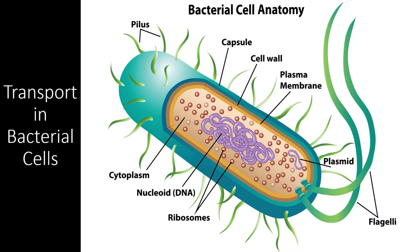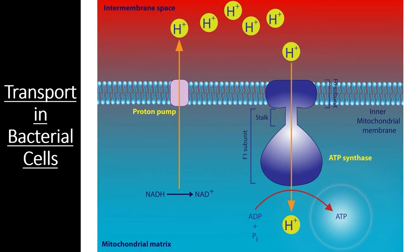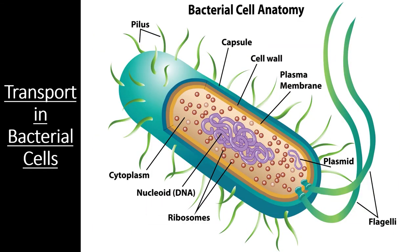Bacterial cells use a number of different mechanisms of transport to import and export substances. Since bacterial cells are already so small, they do this mostly through the use of integral membrane proteins using both active and passive forms of transport. We've already seen how bacterial cells can generate ATP using these types of transport. However, bacterial cells use thousands of different proteins to carry out the functions of life. For example, bacterial cells need to gather nutrients and expel waste products in order to grow and reproduce. If a bacteria lives in a hypotonic environment, it may need to actively transport things like glucose, amino acids, and other molecular building blocks into the cell.